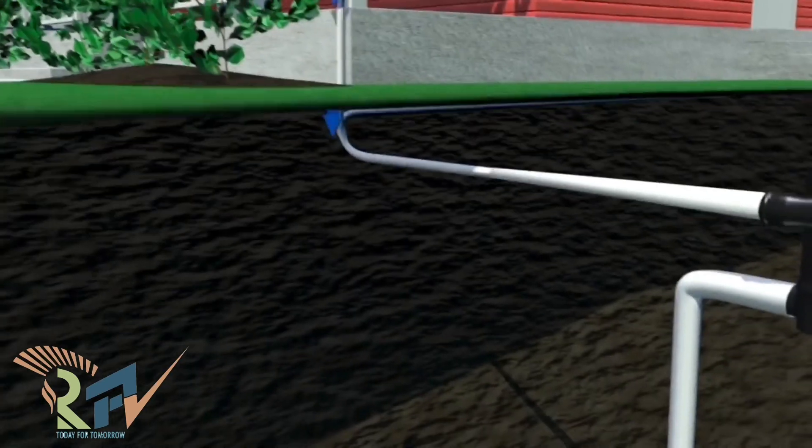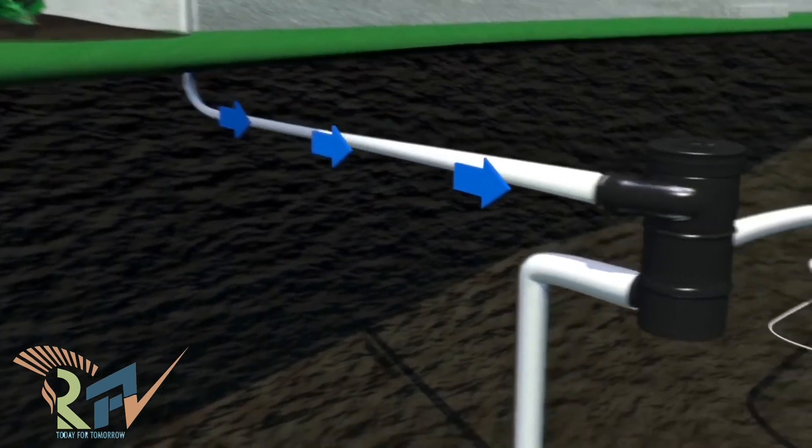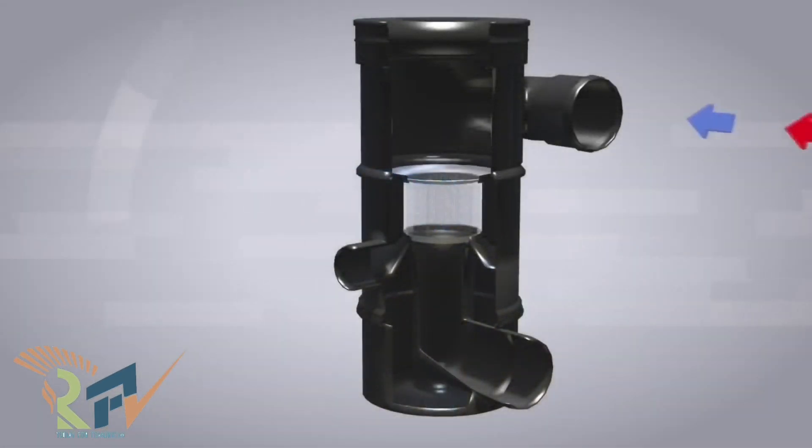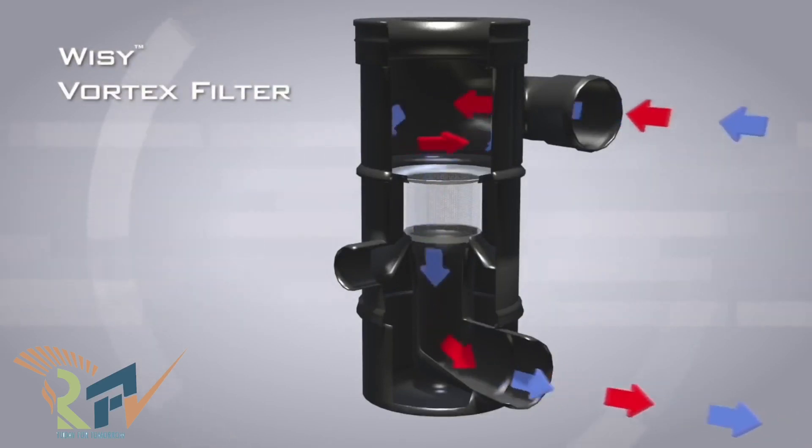The water first enters the WSI vortex filters. It is diverted to overflow, as most of the contaminants rinse from the roof during the start of the rain event.